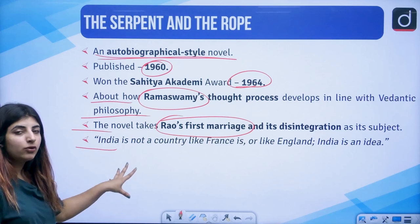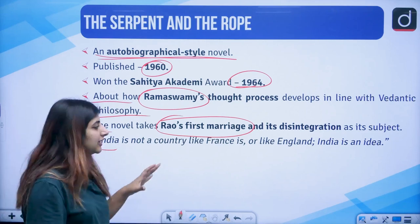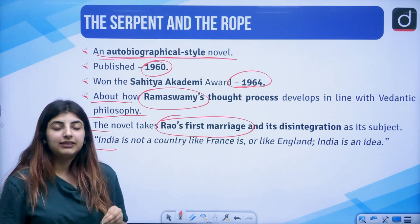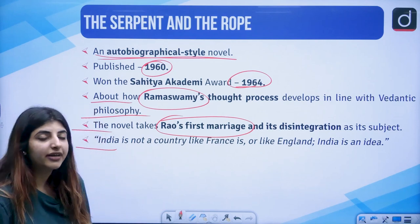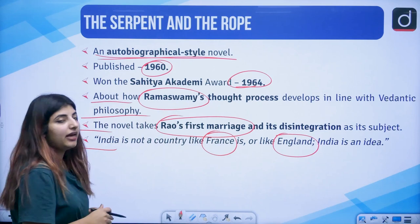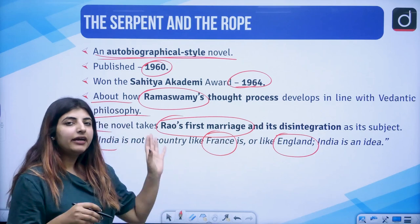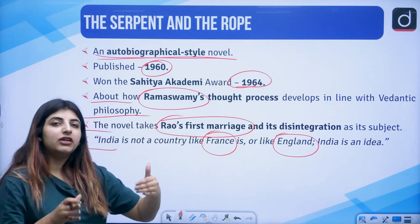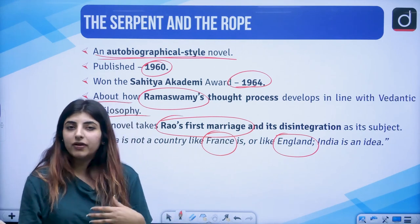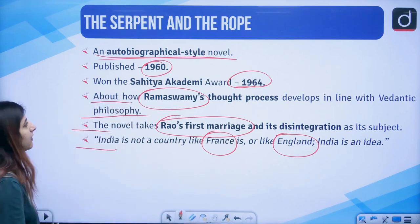There is a prominent quote from this novel: 'India is not a country like France is or England. India is an idea. India is a philosophy.' This novel also deals with the trips of Ramaswamy meeting his wife and moving back and forth to India, then coming back to England, France, so on and so forth — hence the reference to those three countries. The title The Serpent and the Rope is inspired by the snake, which represents illusion, and the rope, which represents reality.